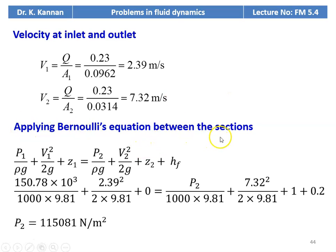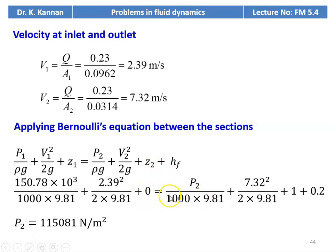Applying Bernoulli's equation between sections 1 and 2: P1/ρG + V1²/2G + Z1 = P2/ρG + V2²/2G + Z2 + HF. Taking Z1 = 0 and Z2 = 1 meter: 150,780 / (1000 × 9.81) + 2.39² / (2 × 9.81) = P2 / (1000 × 9.81) + 7.32² / (2 × 9.81) + 1 + 0.2. Solving, the outlet pressure P2 = 115,081 N/m².